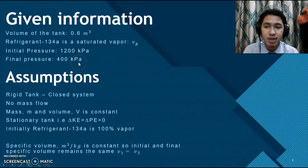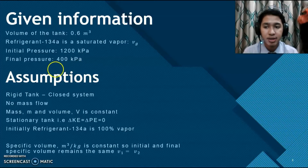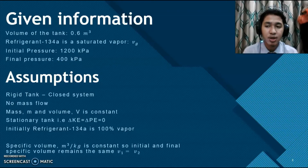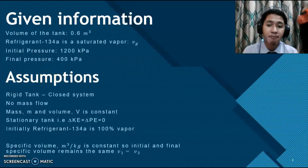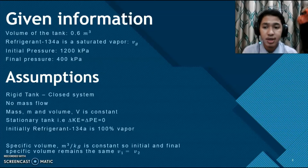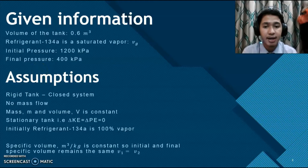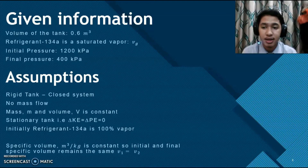First thing first: when you get a question, you have to state the assumptions. Since the question mentions a rigid tank, it is a closed system. In a closed system, only energy can flow in and out — there is no mass flow. Mass and volume are constant. The tank is stationary, so kinetic energy and potential energy equal zero. The initial refrigerant 134A is 100% vapor.